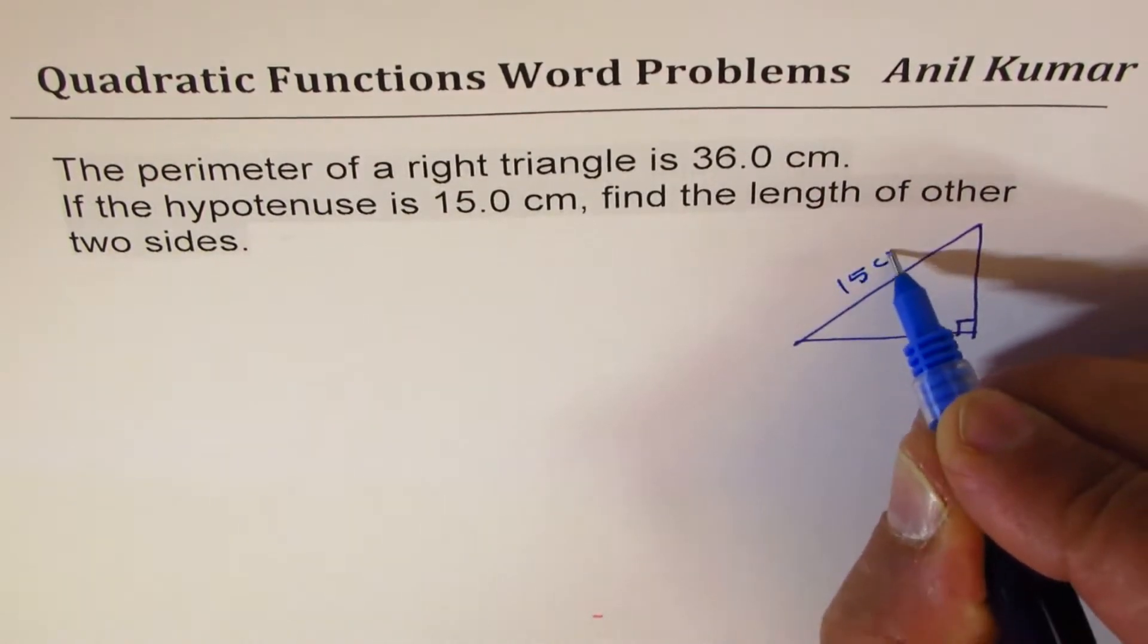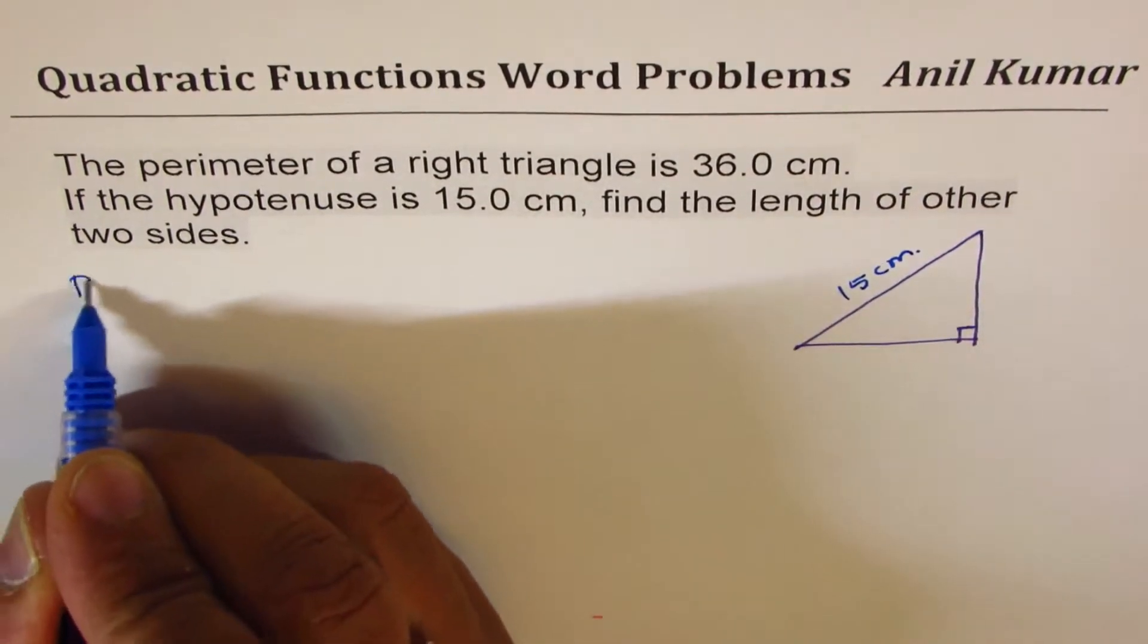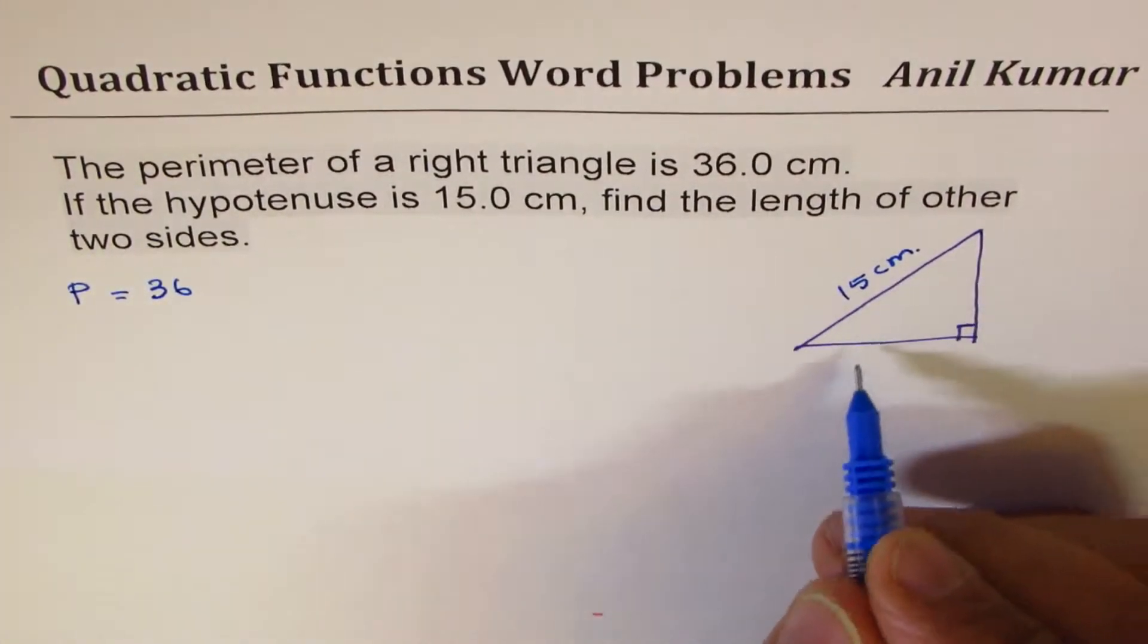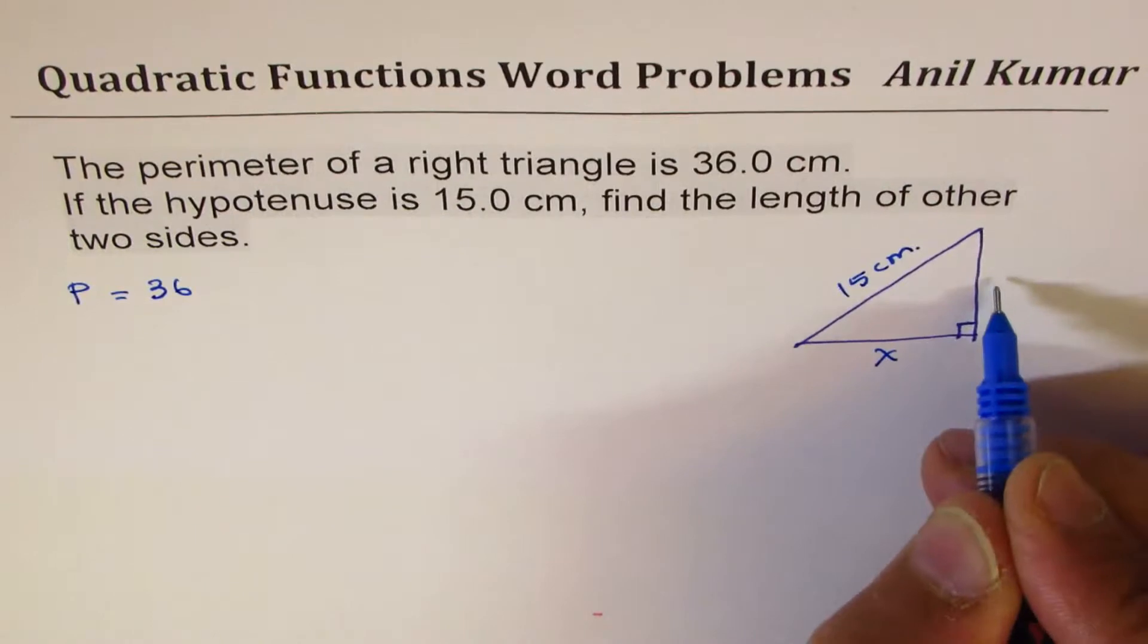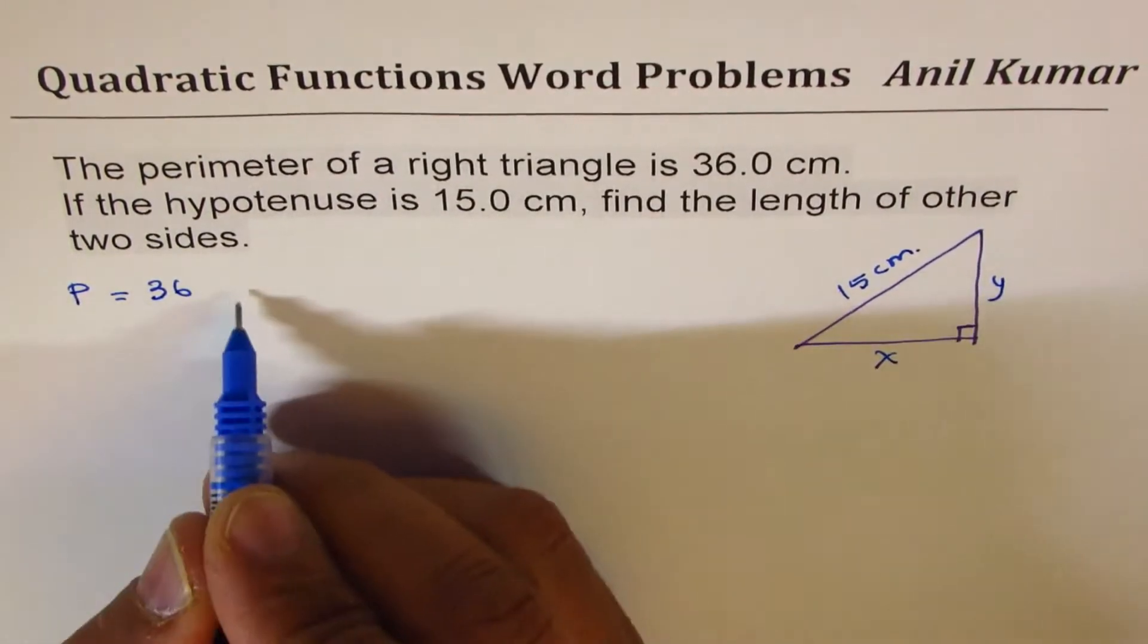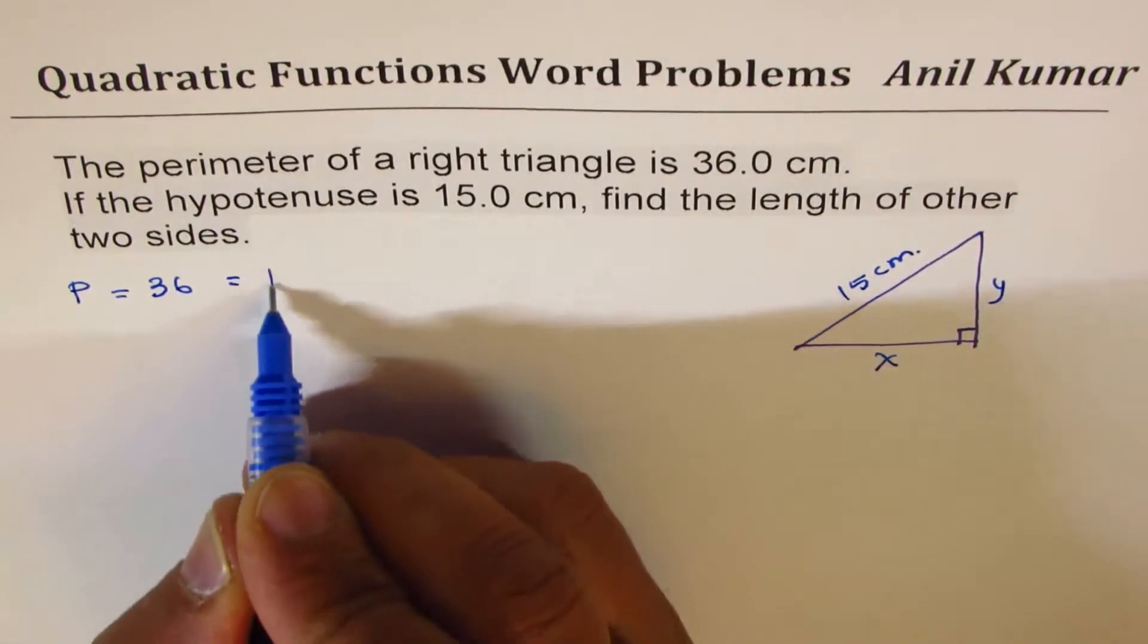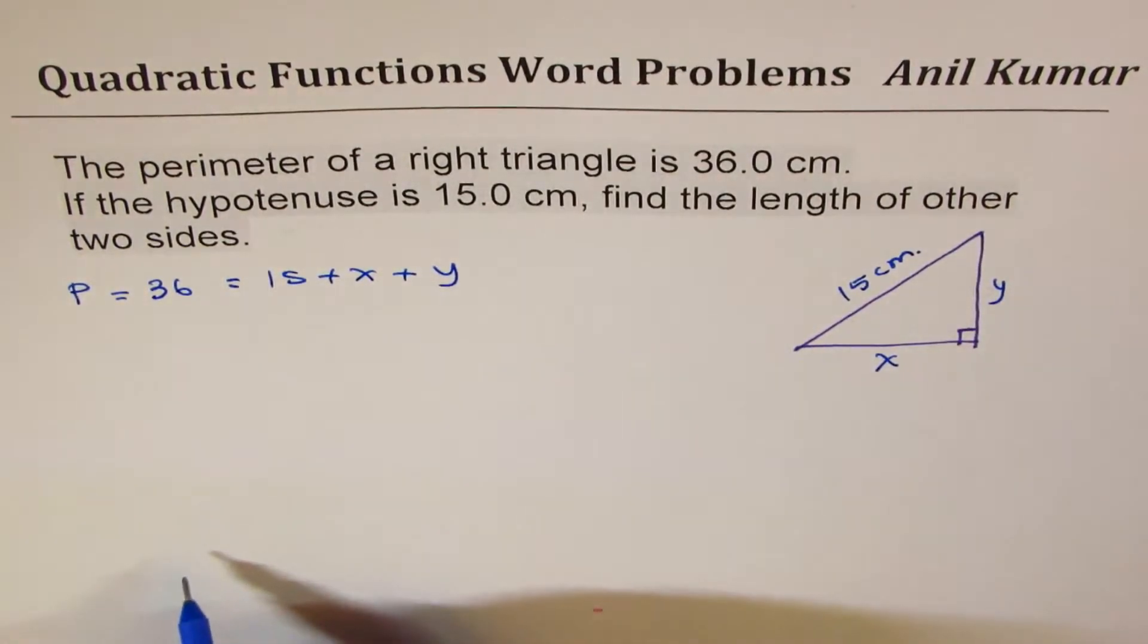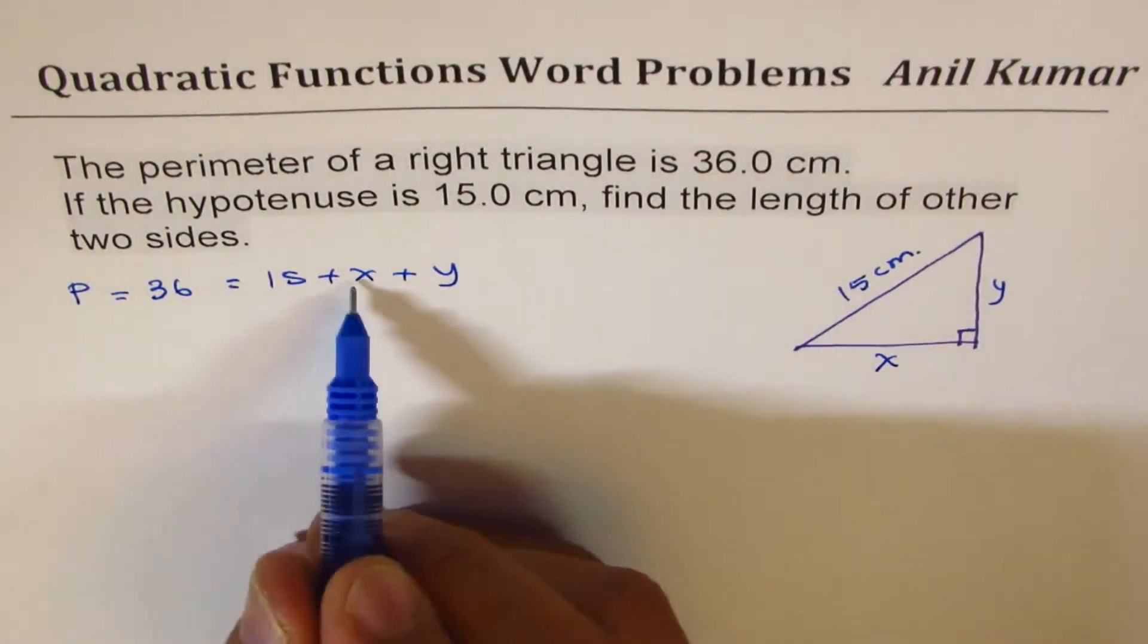Since perimeter is 36, it means what? Let the other two sides be X and Y. It means that 36 should be equal to 15 plus X plus Y. So that relates X and Y.